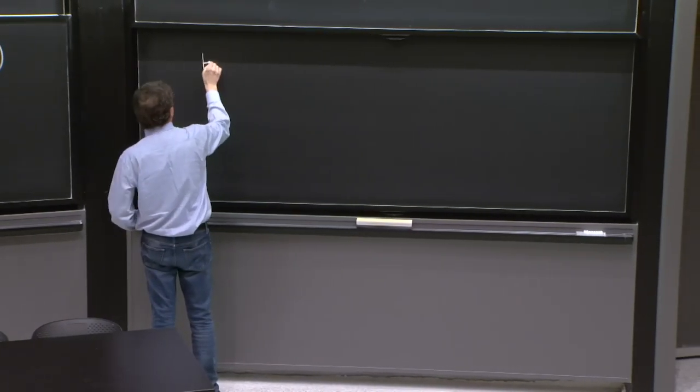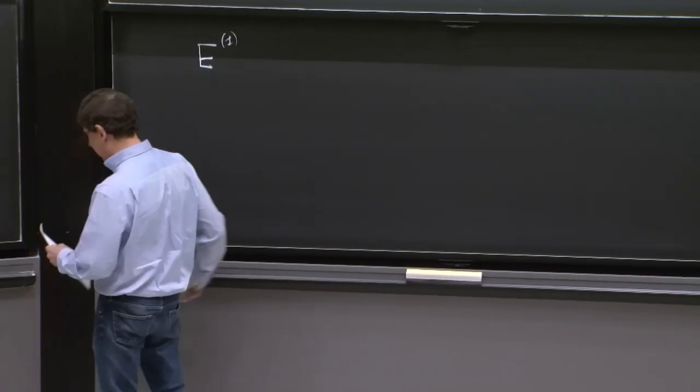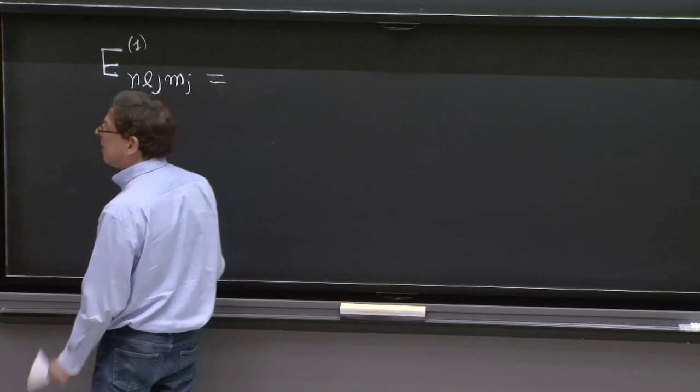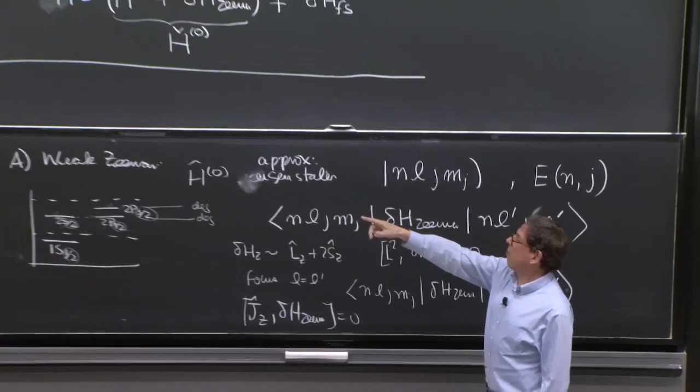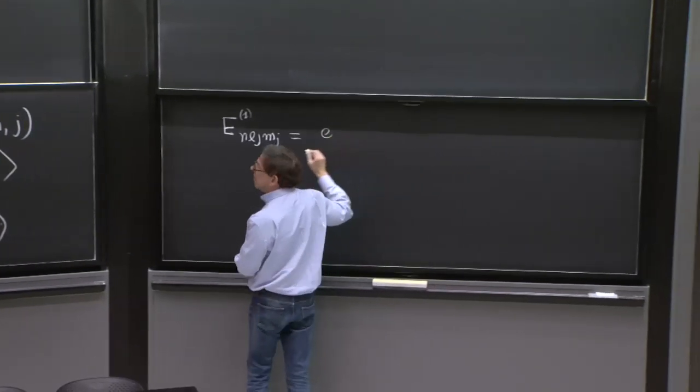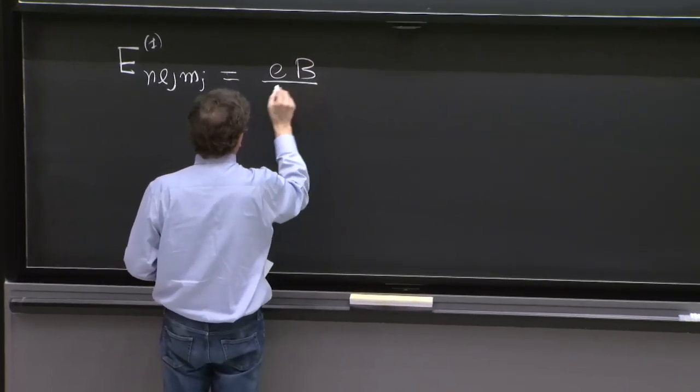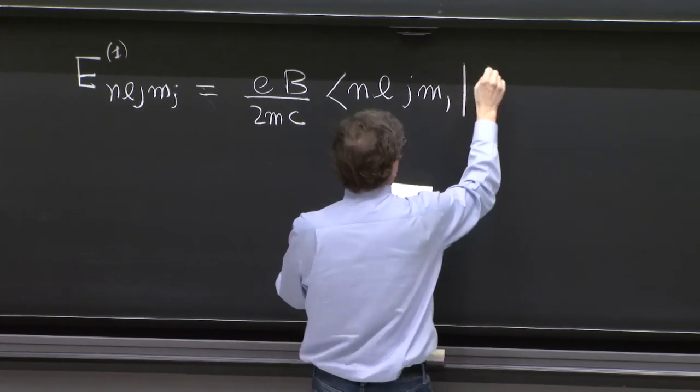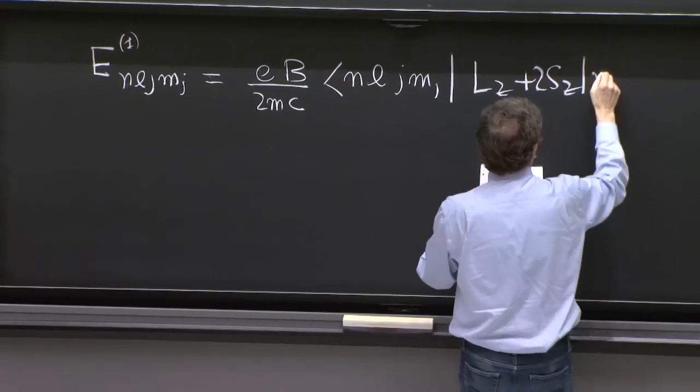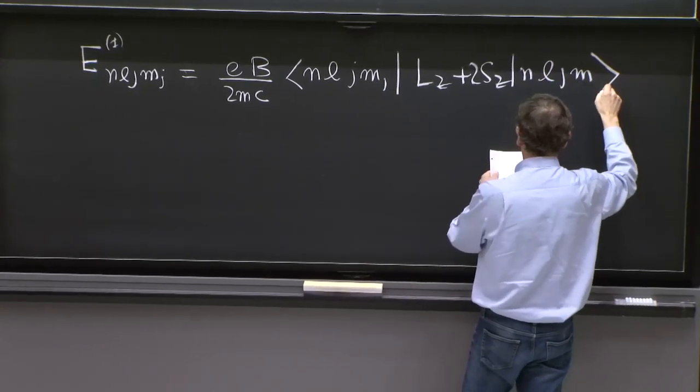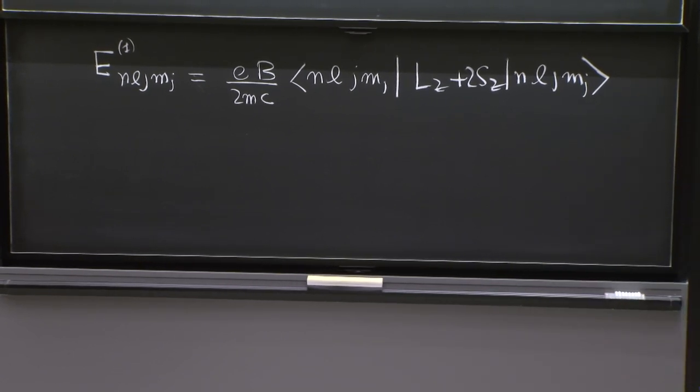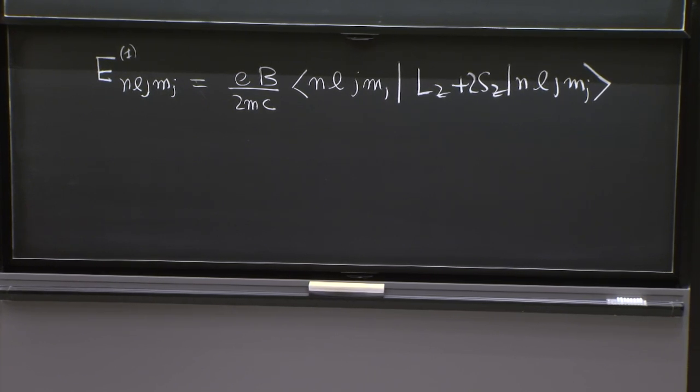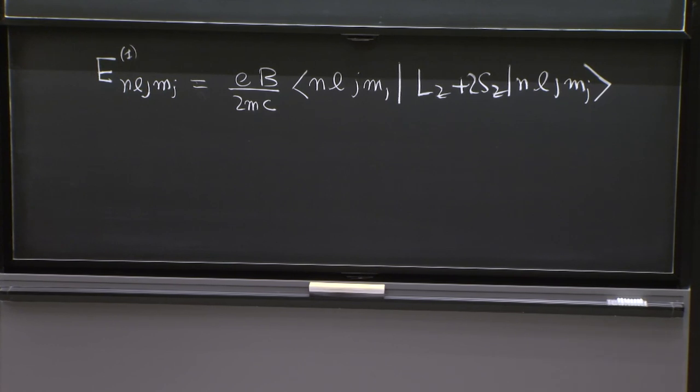So what do we need to compute? We'll have the first order corrections due to Zeeman on the N, L, J, Mj basis is equal. Well, the Zeeman Hamiltonian had an E over 2mc. So let's put the B close to the E, 2mc. And now we have to do N, L, J, Mj, Lz plus 2Sz, N, L, J, Mj. Perfectly diagonal. And that's non-degenerate perturbation theory is going to give us all the energies we want, all the splittings we want.